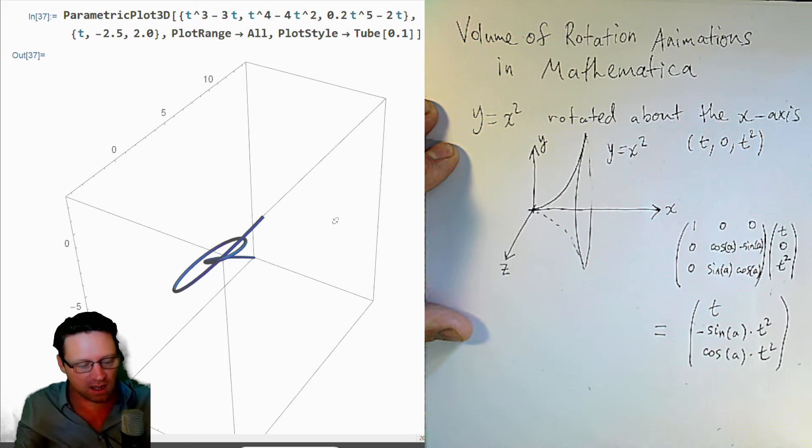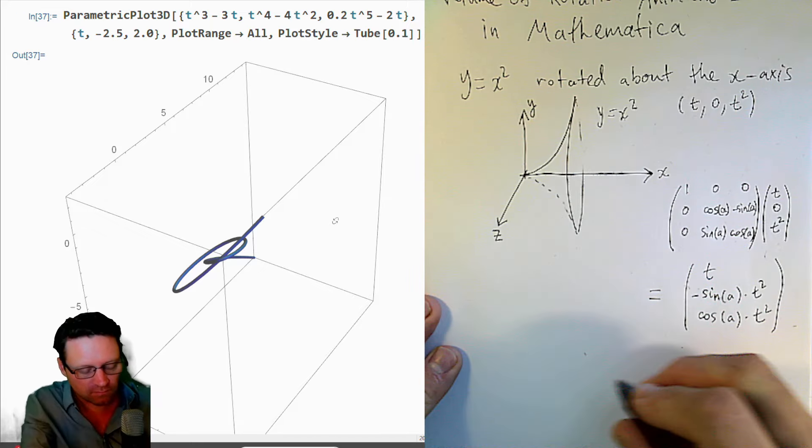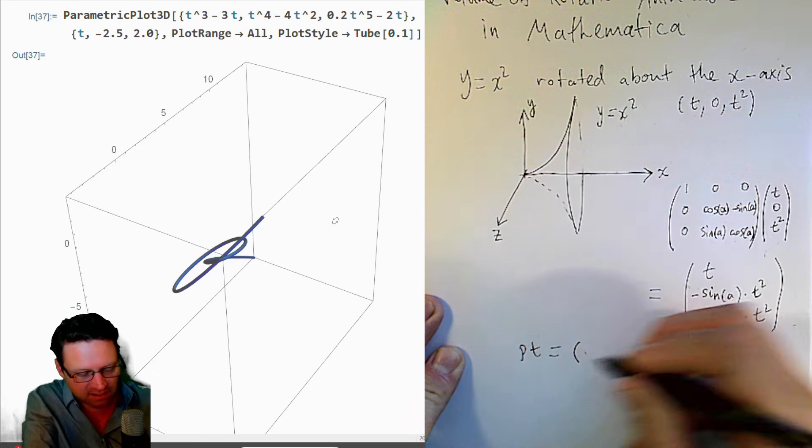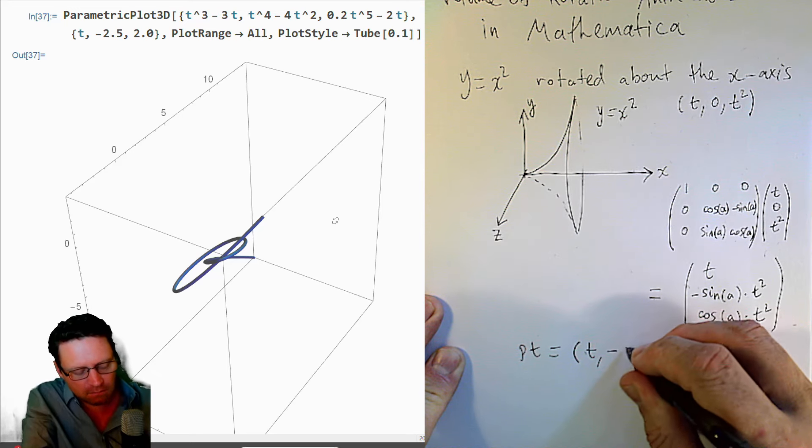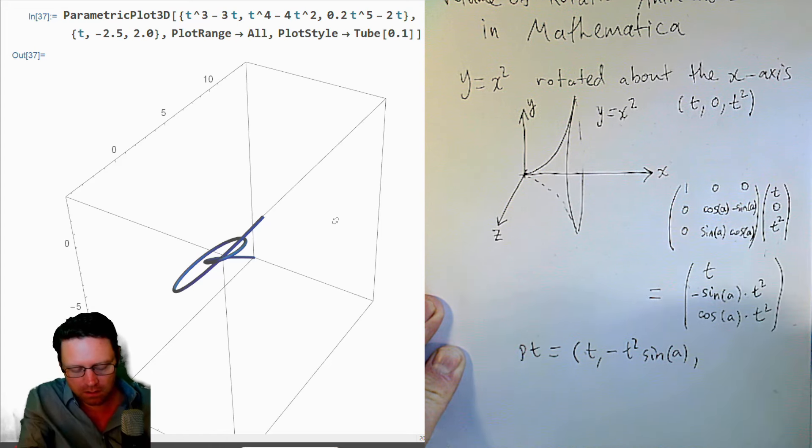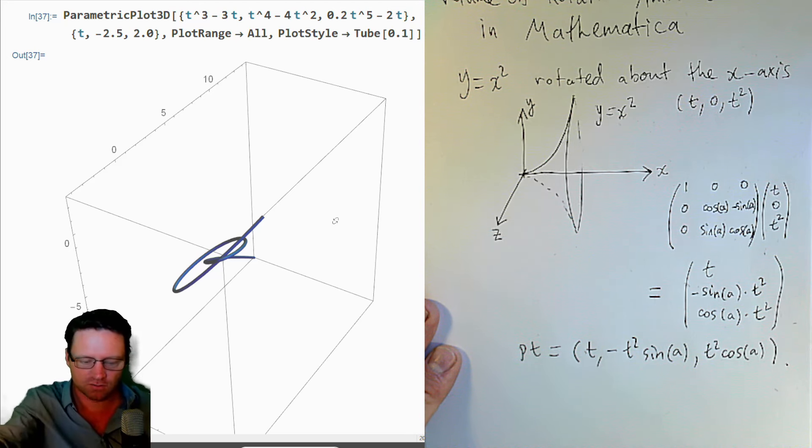Okay, and so then viewed back as a point, then the point would be the point t, minus t squared sine of A, and t squared cosine of A. All right, so let's take this over to Mathematica now.